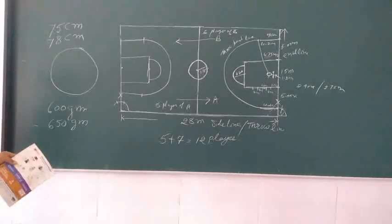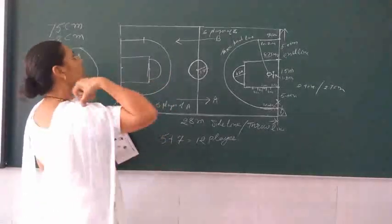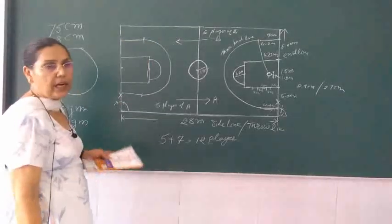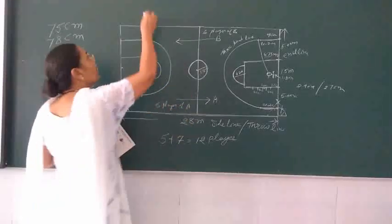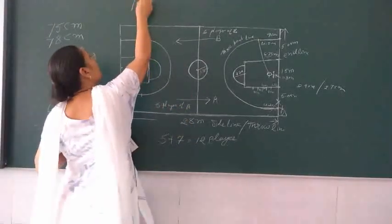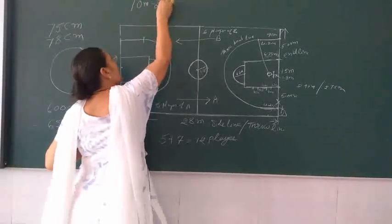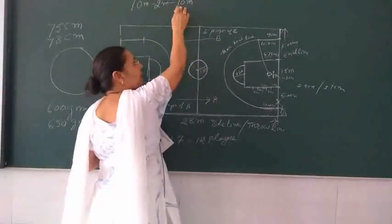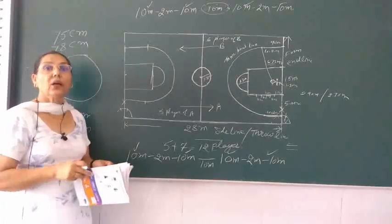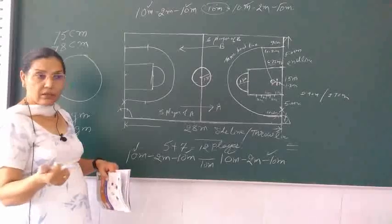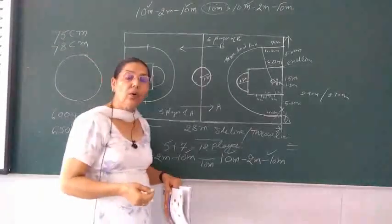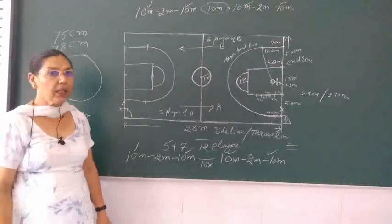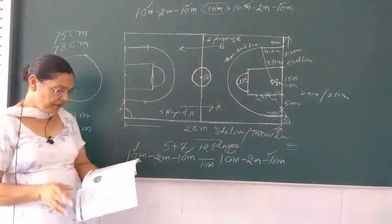The duration of the game is divided into four quarters of ten minutes each. After each quarter, teams exchange sides in two minutes. Then again ten minutes of play. Next, we will cover the three-second rule, the eight-second rule, and the twenty-four-second rule — these are the violations. Fouls will be covered in the next video.